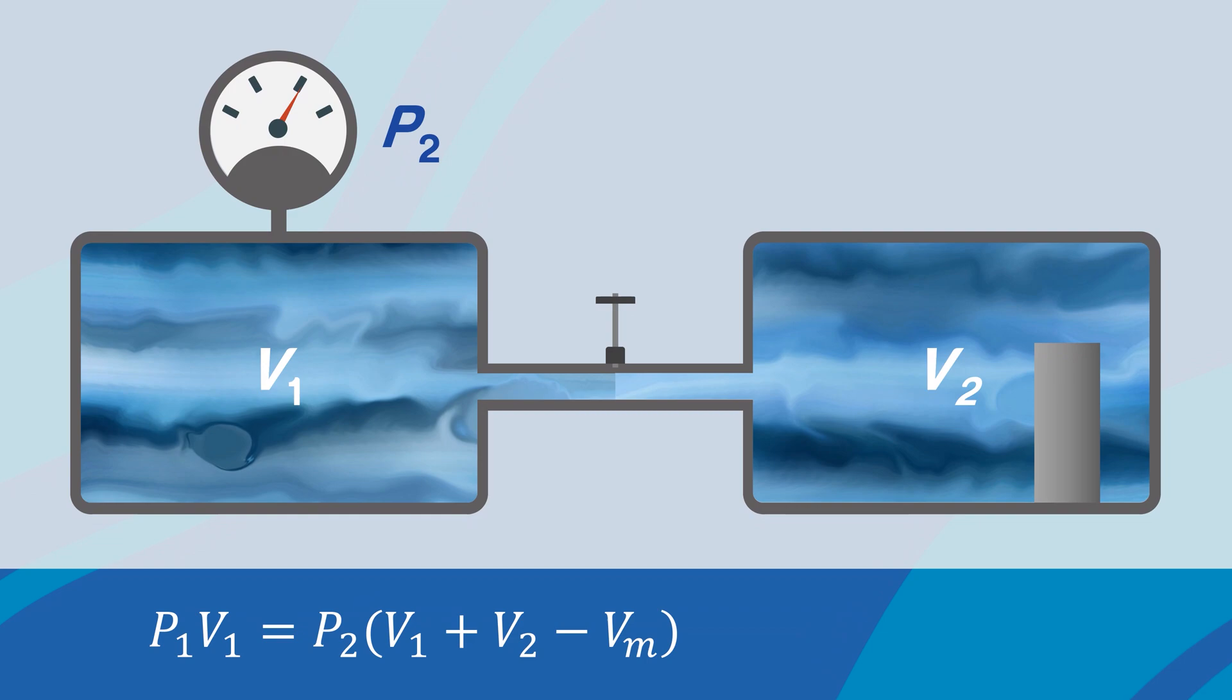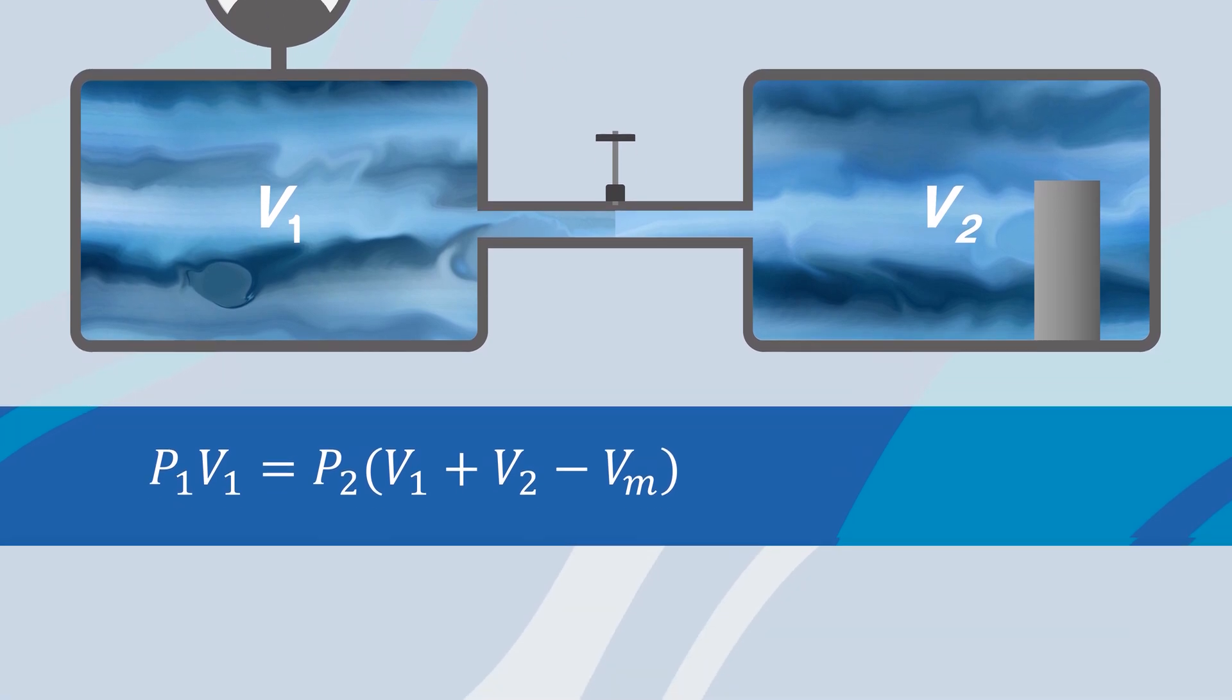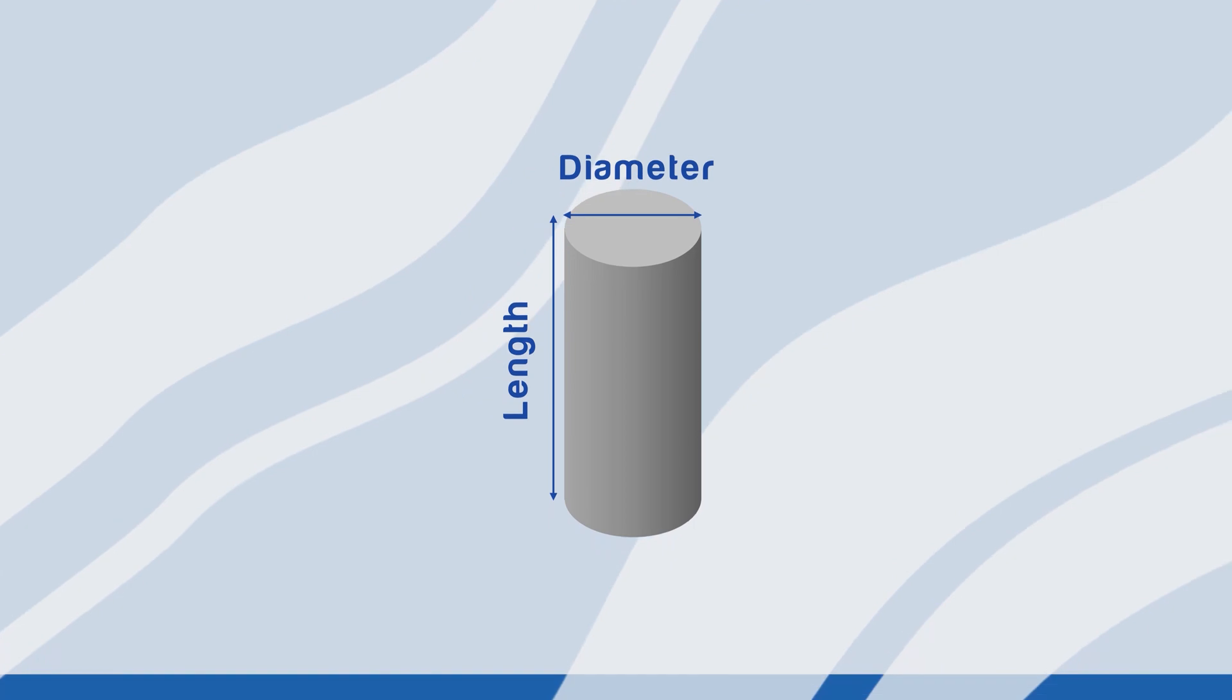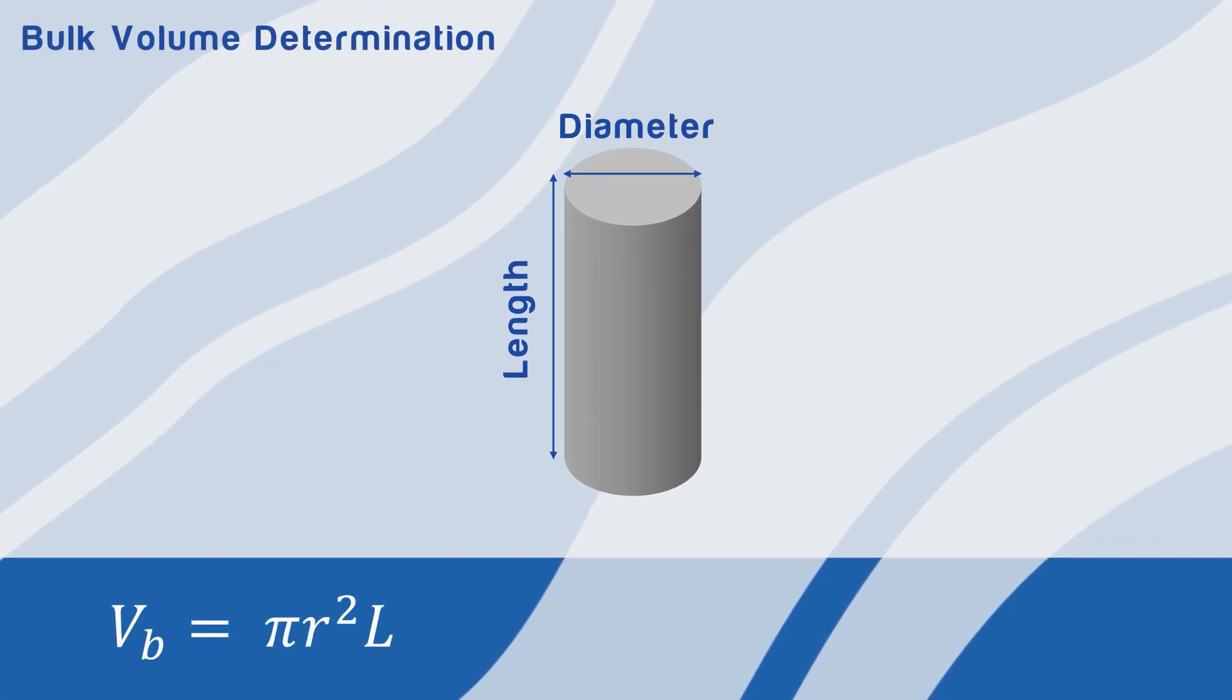Using this technique, we will find vm as v1 and v2 are constants, and p1 and p2 will be read from the pressure sensor. After finding vm and also knowing the bulk volume of the core sample, which is easy to measure, we can calculate the porosity from the following equation.